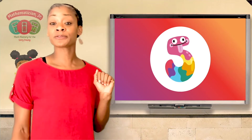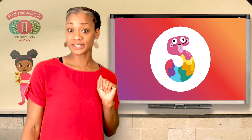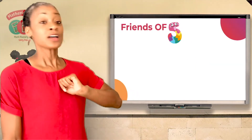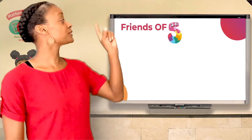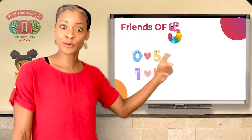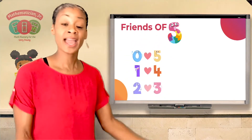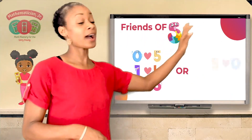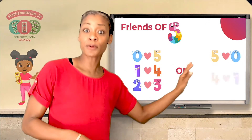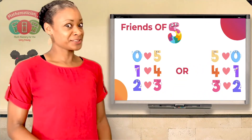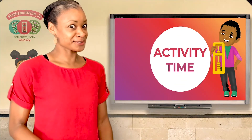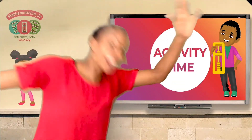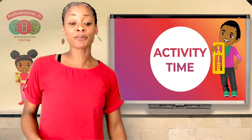We talked about the friends of five. Just as a review, we'll go over them again. The friends of five were: zero and five, one and four, two and three. And we can reverse them: five and zero, four and one, three and two. Let's make sure you remember — time for a hot activity review!